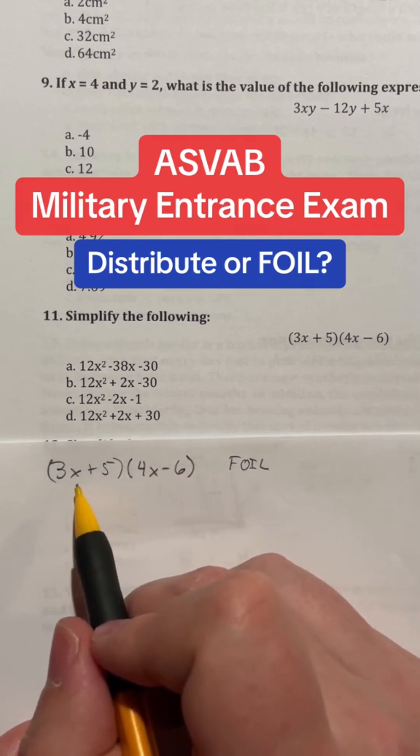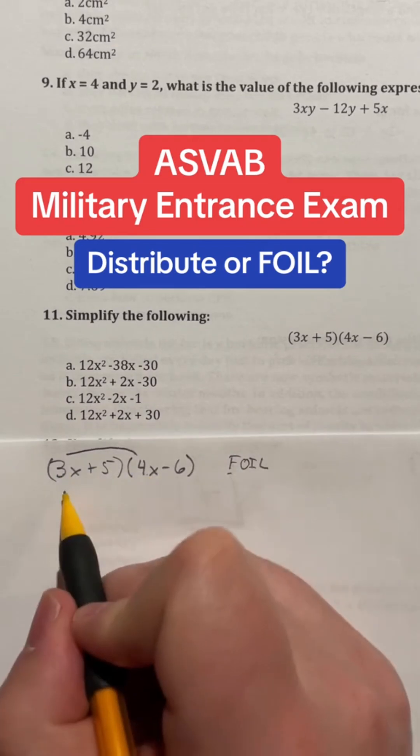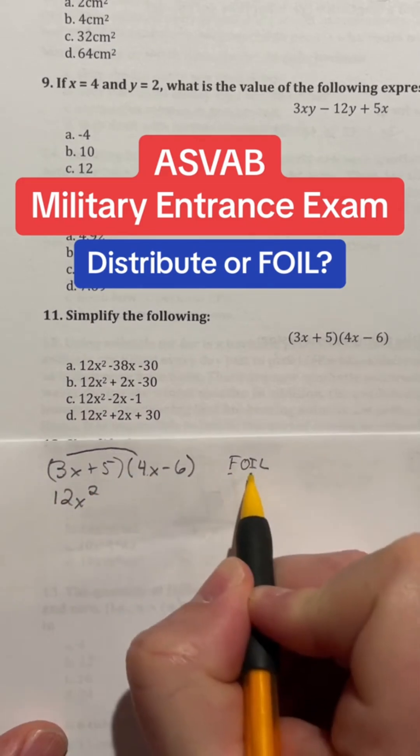First, this F stands for first. So we take the two first terms when we multiply them together, 3x times 4x is going to give me 12x squared. The O in FOIL stands for outside, so it reminds us that we have to multiply these outside terms. 3x times the negative 6 would give me negative 18x.